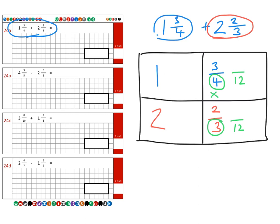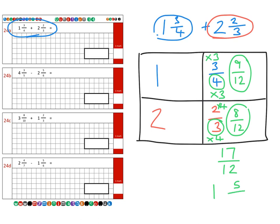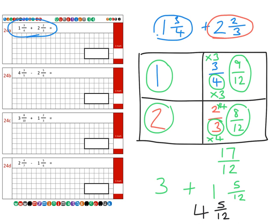I've multiplied my four by three to get twelve, so I do the same with the numerator: that's nine. I've multiplied three by four to get the new twelve, so doing the same with the top gives eight. Adding nine twelfths and eight twelfths gives seventeen twelfths, the same as one and five twelfths. Over here I have one whole and two wholes — three altogether. Adding everything gives a final answer of four and five twelfths. I really like this method; it's like working in columns as we do for standard addition and subtraction, so give it a go and see which one you prefer.